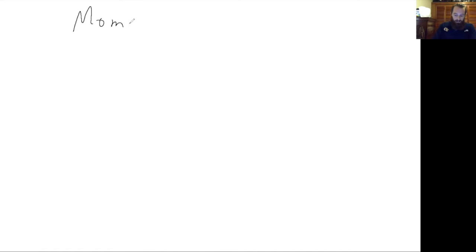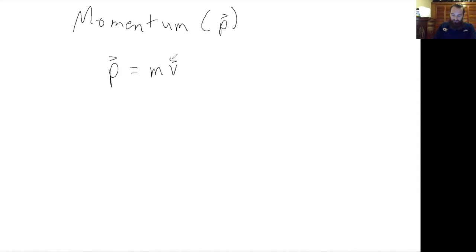Today I'm going to talk about momentum and show how to solve physics problems using the conservation of momentum. Momentum, which we represent with the lowercase p, is defined as the mass times the velocity of an object. And since velocity is a vector, momentum is also a vector.